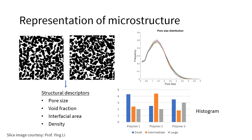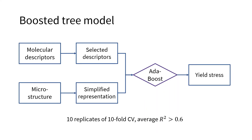As for microstructure, the raw data are very complex three-dimensional structures, which are not suitable for machine learning. What we do is extract statistical representations from the structures, such as volume fraction, pore size, and interfacial area. In particular, the pore size distribution curve for each polymer still has very high dimensionality. We reduce the dimension by converting it to a histogram-type data.